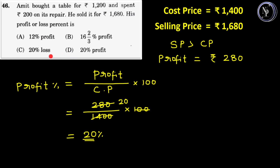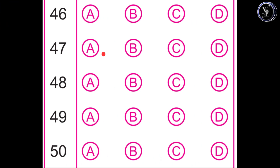In answer option C we have 20% loss, but Amit has gained some profit. Therefore, answer option D — 20% profit — is the correct answer. We mark it on the OMR answer sheet corresponding to question number 46. The answer option D is the correct answer.